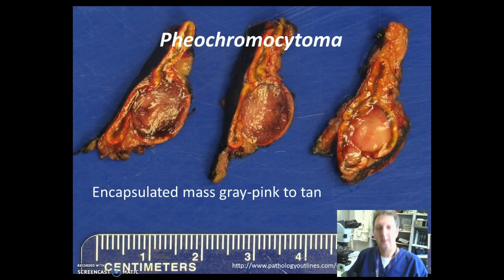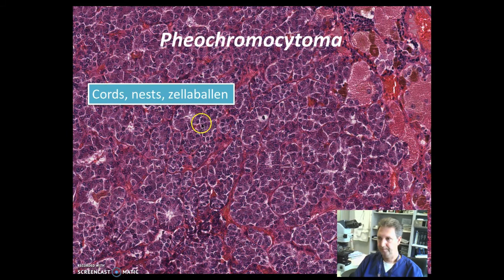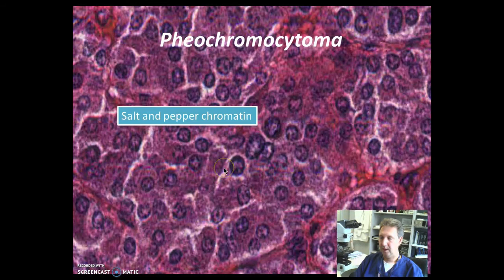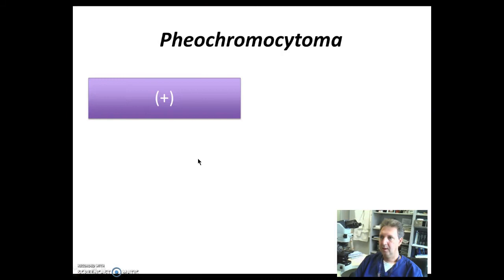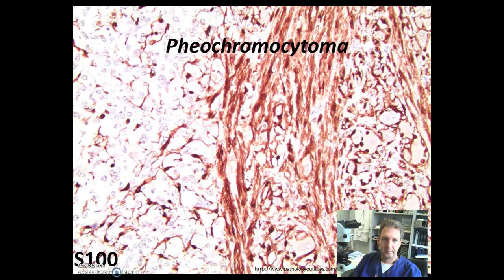The gross sections will show that this is a well-encapsulated gray-pink to tan mass. Sections show the proliferation of cords, nests, or Zellballen, which are these groups of cells, with a delicate fibrovascular septum. Higher power will show that these cells have what is called the salt and pepper chromatin, or stippled chromatin. Immunostains will show that these tumor cells are positive for chromogranin, synaptophysin, neurofilament, and S100 will show these spindle sustentacular cells. They are negative for cytokeratin and vimentin. The S100 stain is used to highlight these spindle sustentacular cells.